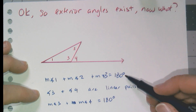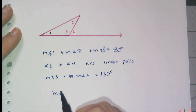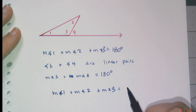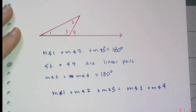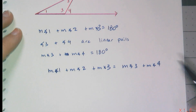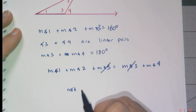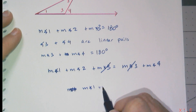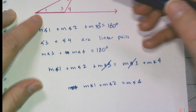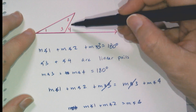I have two sums of angles that both add up to 180. So I can create the equation: measure of angle one plus measure of angle two plus measure of angle three equals measure of angle three plus measure of angle four, by simple substitution from algebra one. Measure of angle three appears on both sides, so I can use the subtraction property of equality to get rid of those. That leaves: measure of angle one plus measure of angle two equals measure of angle four. Looking back at the picture, angle four is the exterior angle, and one and two are the remote interior angles.